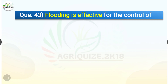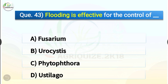Question number forty-three: Flooding is effective for the control of dash. The options are Fusarium, Eurocystis, Phytophthora, or Ustilago. The correct answer is option A, Fusarium. Soil flooding results in an accumulation of ammonia which has been shown to reduce the population density of Fusarium species in soil. Flooding also creates anaerobic conditions that alter soil microbial communities, reducing the survival of some soil-borne pathogens.